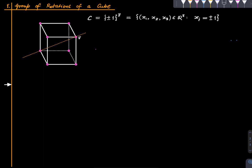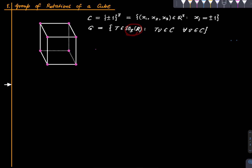Our group G consists of those elements in SO(3,R) such that Tv belongs to C for all v in C — those rotations of three-dimensional space which take every vector in C to a vector in C. So G captures the rotations of the cube.